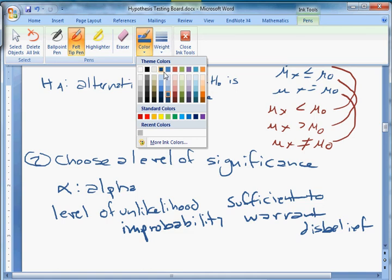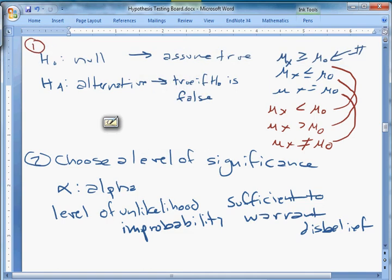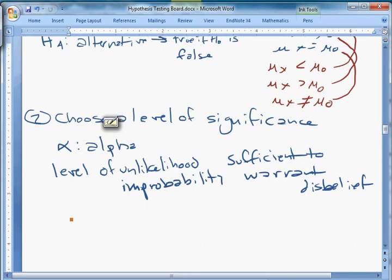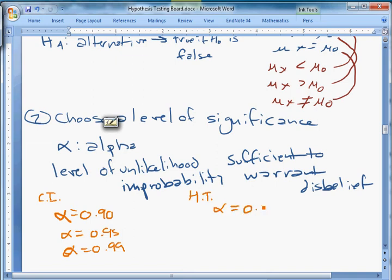Meaning that if something is sufficiently unlikely, then we're going to reject that belief. When we worked with confidence intervals, I talked about this a little bit, but it's kind of an annoying notational problem. For confidence intervals, a lot of times you'll see alpha equals 0.90, or 0.95, or alpha equals 0.99. For hypothesis testing, usually these are written like this: alpha equals 0.10, alpha equals 0.05, alpha equals 0.01, and these correspond.